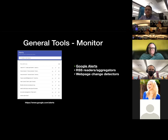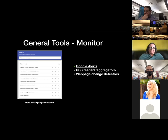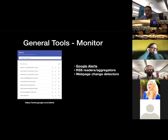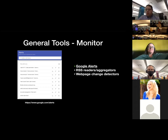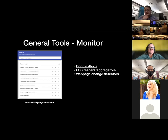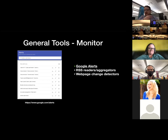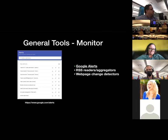Next up is monitoring. You might want to monitor the topics and discourses you're interested in over a long period of time, rather than just finding data at one particular moment and moving on. That's where different kinds of monitoring tools come in. I'm sure many of you are already familiar with Google Alerts — you can use it to monitor the web in general, or monitor for news items for the search terms that are of interest to you, using all those advanced search operators.